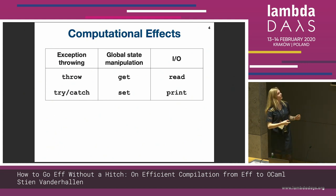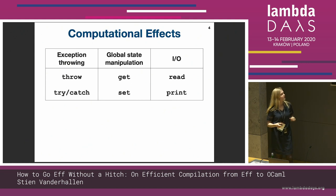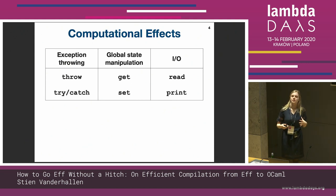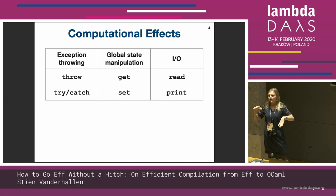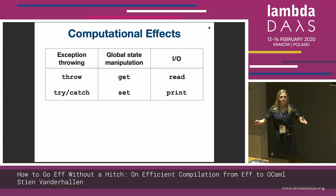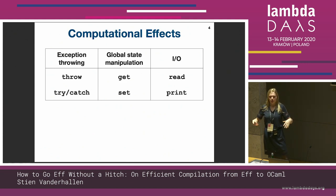And then finally we have IO operations, which are also considered computational effects. Examples there are reading from user input or printing some output information to the user, which we all know as well.